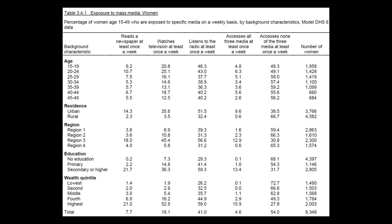Second, the subtitle tells you the topic of the table — in this case, women's exposure to specific media on a weekly basis. Third, the subtitle tells you how the data are presented; here, the data are broken down by women's background characteristics. Finally, the subtitle tells you the survey year and country. For this exercise, we are using the model datasets.